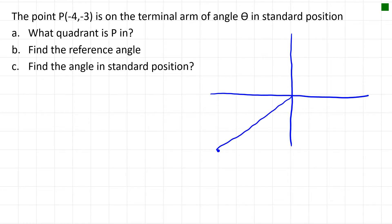That means we've got a right angle triangle with the x-axis, where this side is negative 4 and this side is negative 3. Some of you might recognize this as the 3-4-5 triangle, or you could use Pythagoras to calculate the radius. This point is in Quadrant 3, and the reference angle is this one right here.